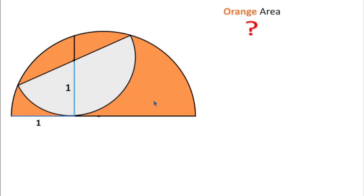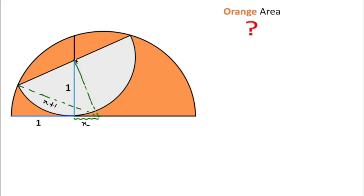So how can we find the orange shaded area? First we need to consider this line segment length from this point to the center of the bigger semicircle as x units. Then we can say the radius for this bigger semicircle is x plus 1. I will draw a perpendicular line on this chord from this point to the center.